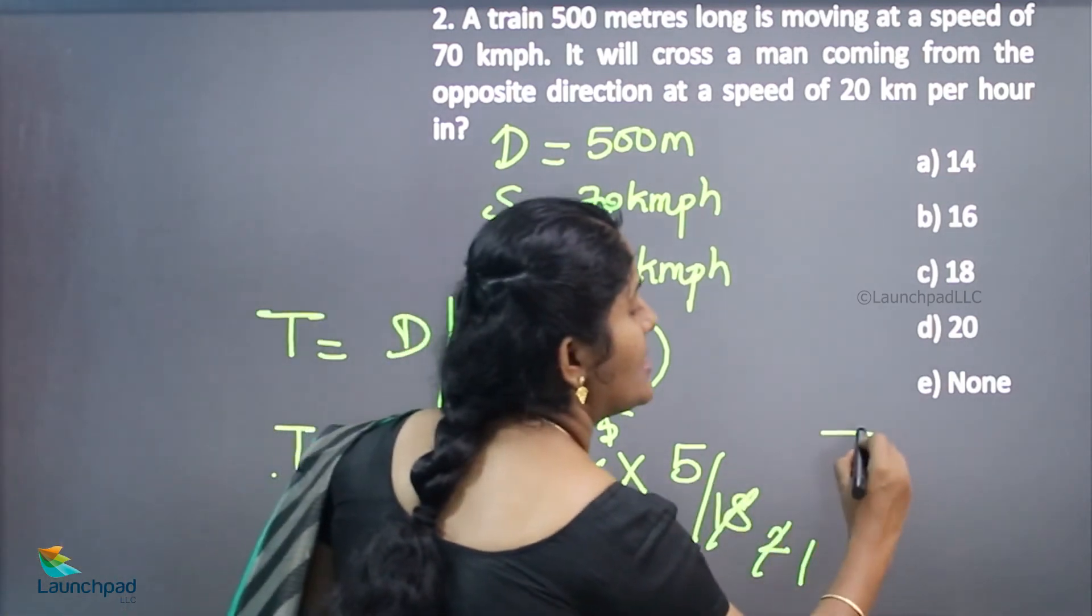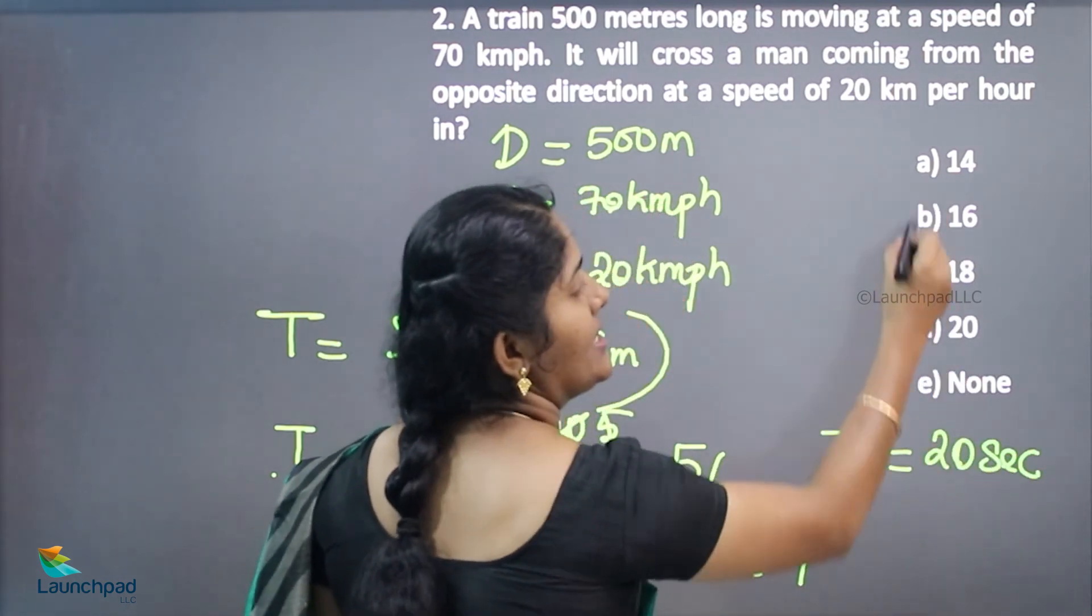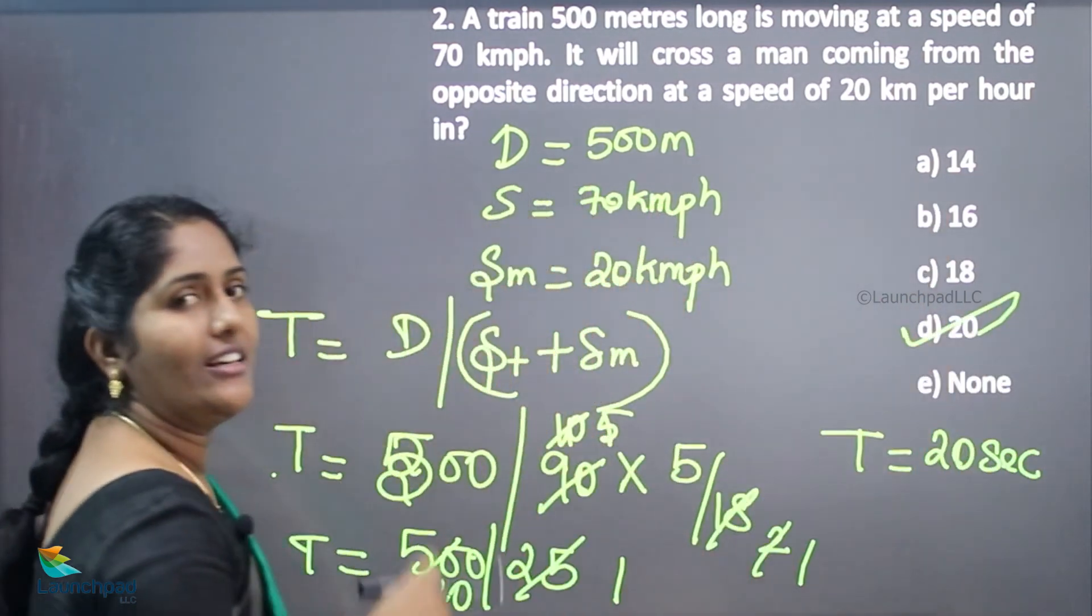Hence, they cross each other in 20 seconds. The train crosses the man in 20 seconds. Option D is correct.